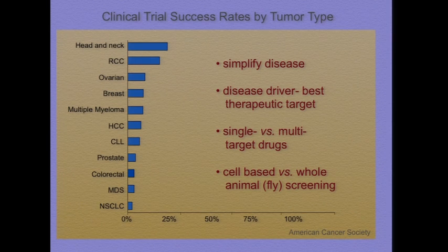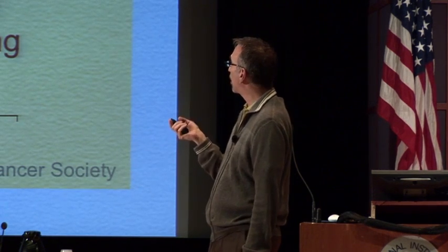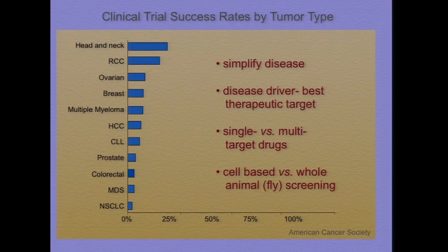Second, there's been an assumption in the field — not necessarily a correct one — that identifying the driver of the disease is the same as identifying the best therapeutic target. This is a more subtle point, and one that we often miss as basic researchers, because we really are focused on identifying drivers of disease. There really are differences if you're focused on mechanism versus focused on therapeutics, and this is one of the reasons why there is a difference. I'm also going to talk about the differences between single and multi-targeting drugs. Each has their advantages and disadvantages. Our expertise is in whole animal.